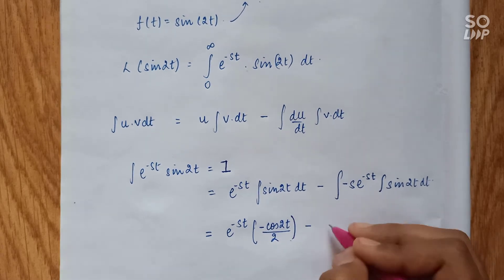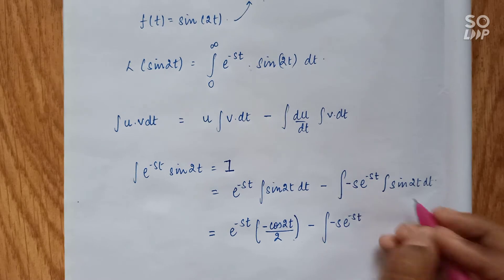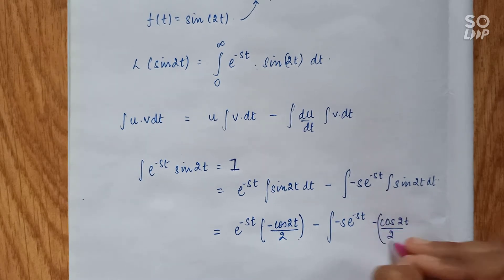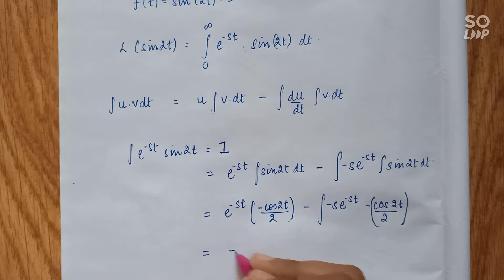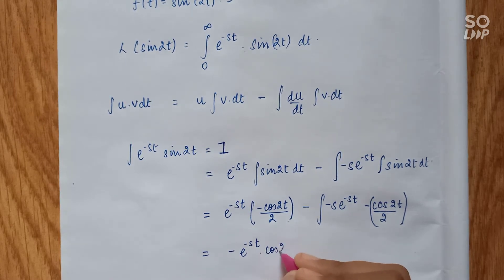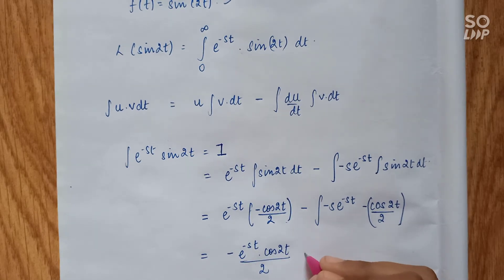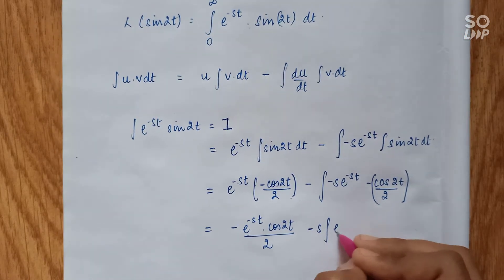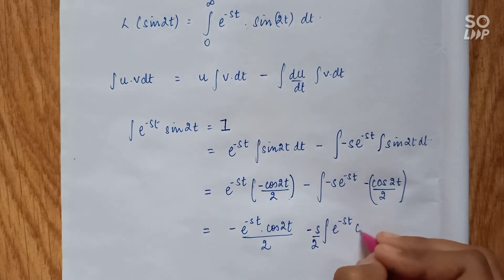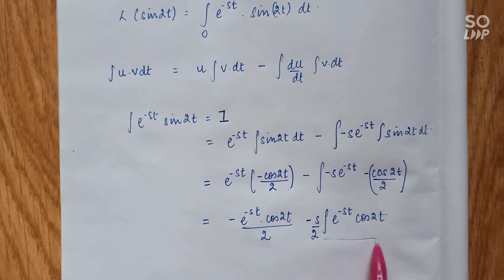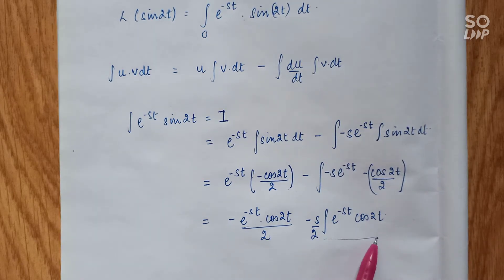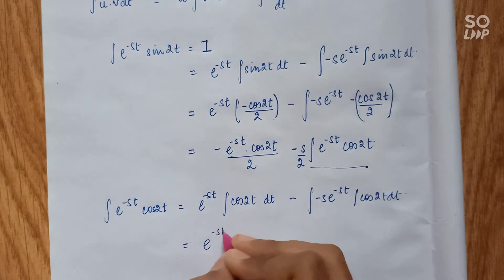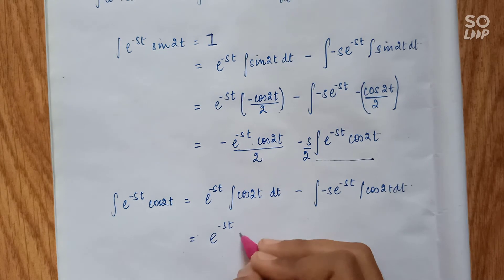This gives us e^(-st) times (-cos(2t)/2), minus the next term where the derivative of e^(-st) is -s·e^(-st). So we get e^(-st)·cos(2t)/2, minus the integral of e^(-st)·cos(2t), with s and 2 taken outside as constants. This inner integral requires applying by parts again separately, with e^(-st) and cos(2t).